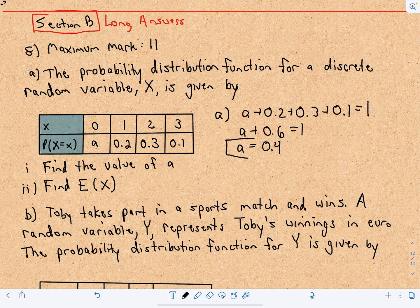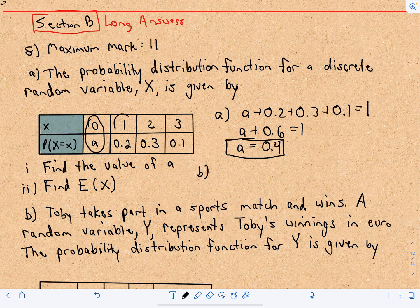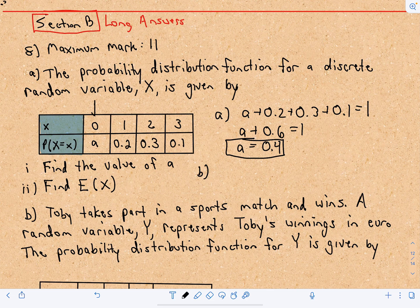So that's going to be our value for A. And for part B to get the expected value, we just multiply each value by its respective probability of occurrence, and then we add those together.